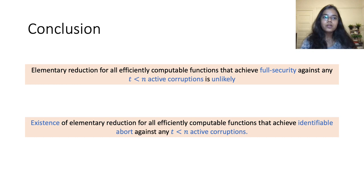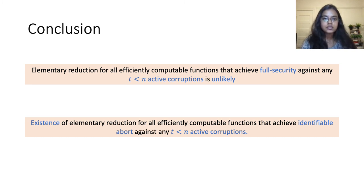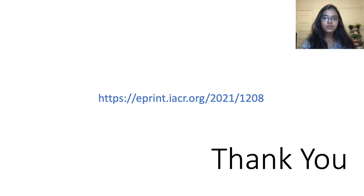To conclude, we show that elementary reductions for efficiently computable functions that achieve full security against a dishonest majority of parties is unlikely to exist, while elementary reductions that achieve identifiable abort against a dishonest majority of parties does exist. Thank you.